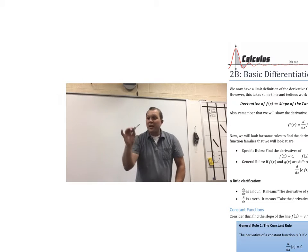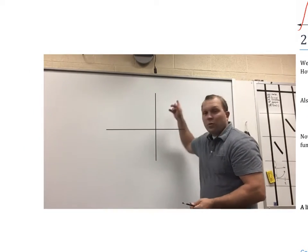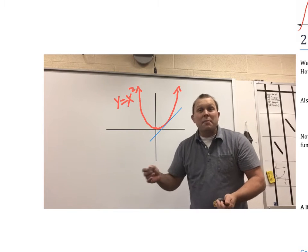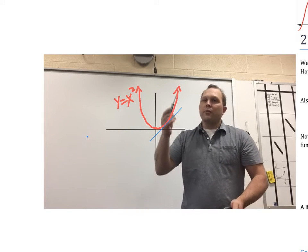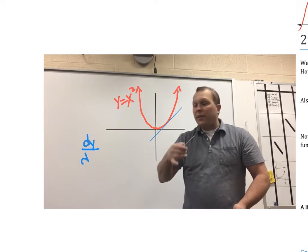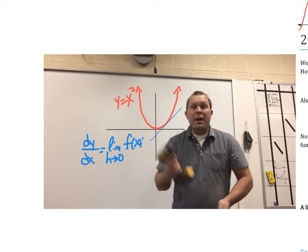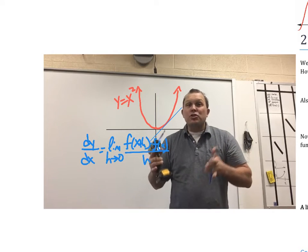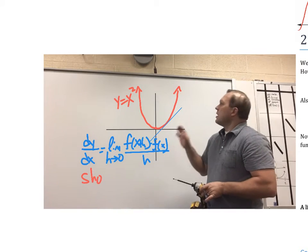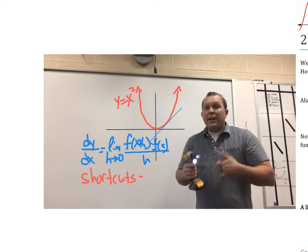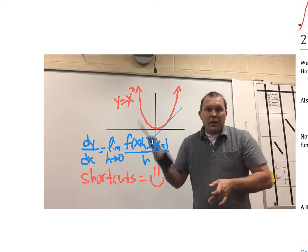The Phillips screwdriver is like our limit definition of the derivative. If we have a function like y equals x squared and we want to find the slope of the tangent line at any point, we can use the formal definition or limit definition of the derivative. It works — we have to press hard to get it done — but now we need a better tool. We're going to look at some shortcuts so we can find that the derivative of y equals x squared is 2x, and quickly find derivatives for lots of important things in math and science.